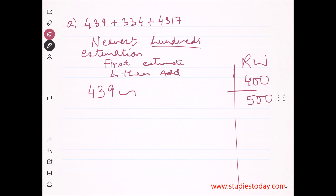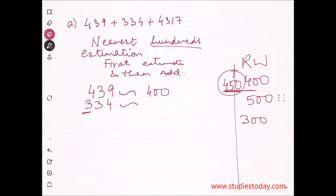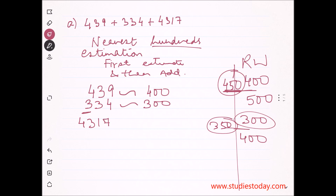So 439 — we make a round-off column. I have to decide: the midpoint is 450, and 439 is smaller than 450, so 439 rounds off to 400. Then 334 — the midpoint between 300 and 400 is 350, and 334 is less than 350, so 334 rounds off to 300.